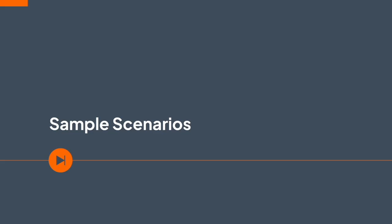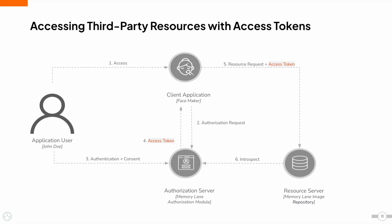Let's look at the sample scenario in detail. As previously discussed, granting full access for Facemaker is not a secure measure as we might encounter security concerns. When the resource owner, John Doe, wants Facemaker to access the resources in MemoryLane, Facemaker redirects John Doe to the MemoryLane authorization server. The MemoryLane authorization server checks whether John Doe has consented to allow Facemaker to access the resources. For this, John Doe will have to log into MemoryLane, authenticate himself, and consent Facemaker to access the MemoryLane resource server. In return, the MemoryLane authorization server sends an access token to the Facemaker client application.